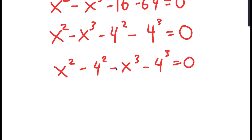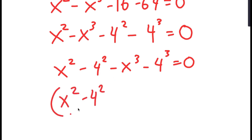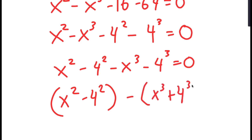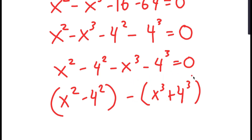There are two properties I'm going to use. I'm going to rewrite this as x squared minus 4 squared, grouped, minus x to the power of 3 plus 4 to the power of 3. We put this plus because this negative sign distributes.